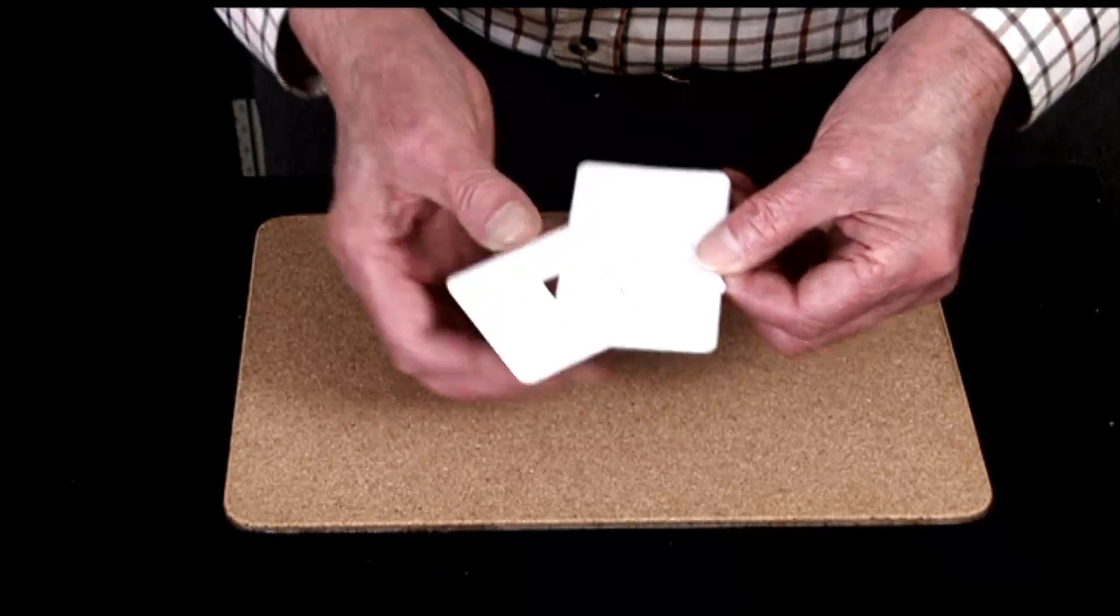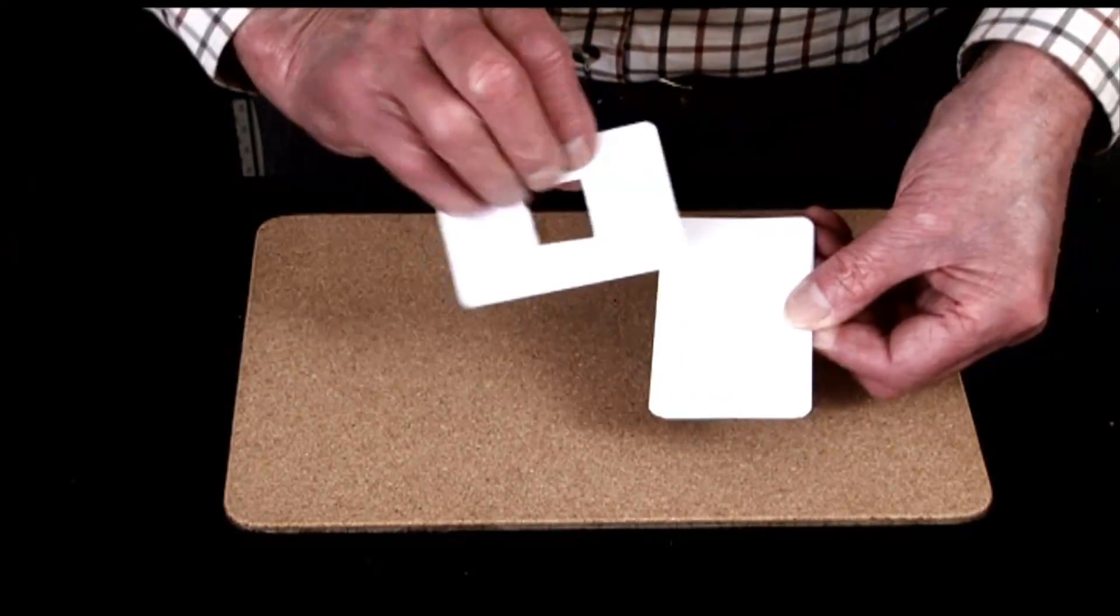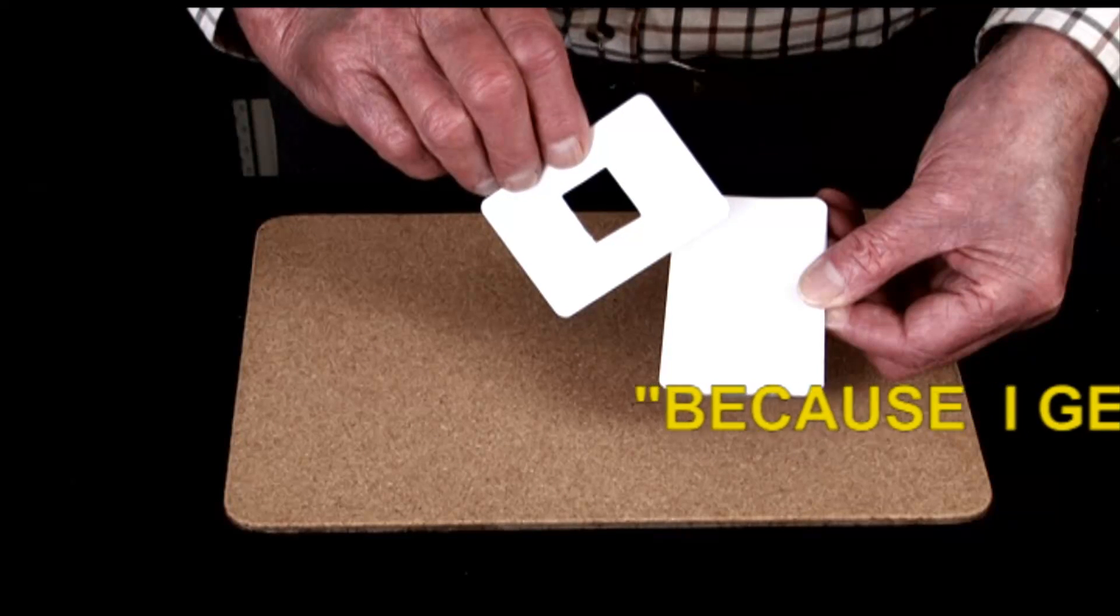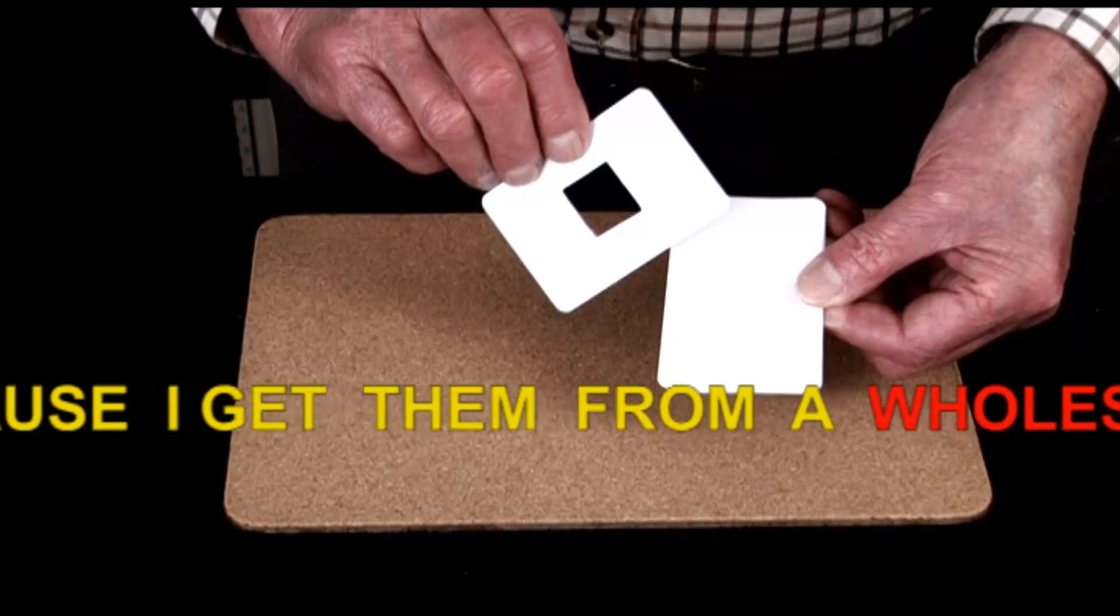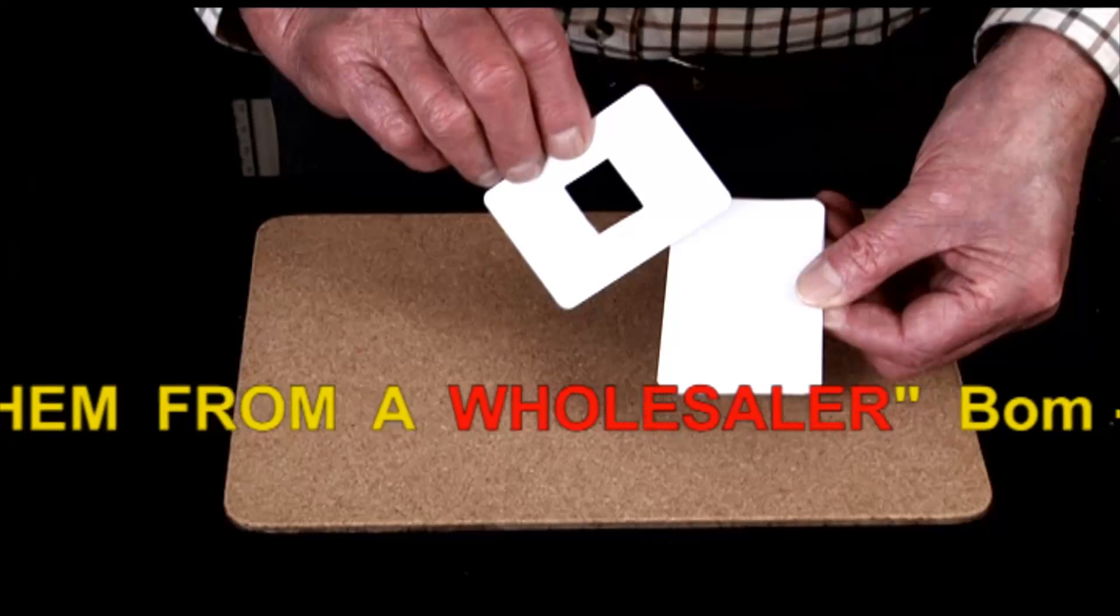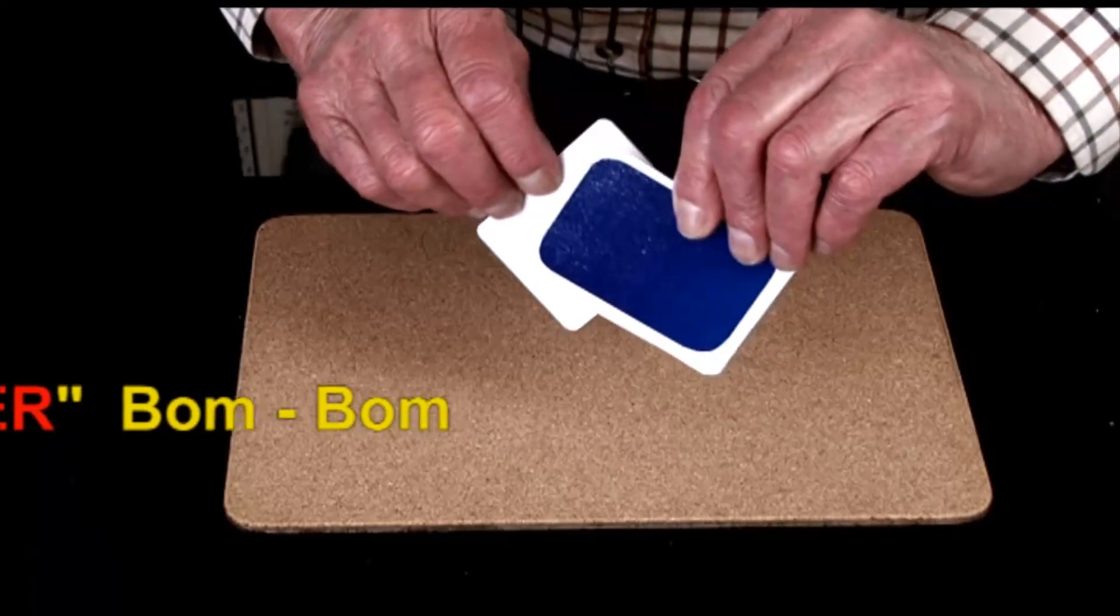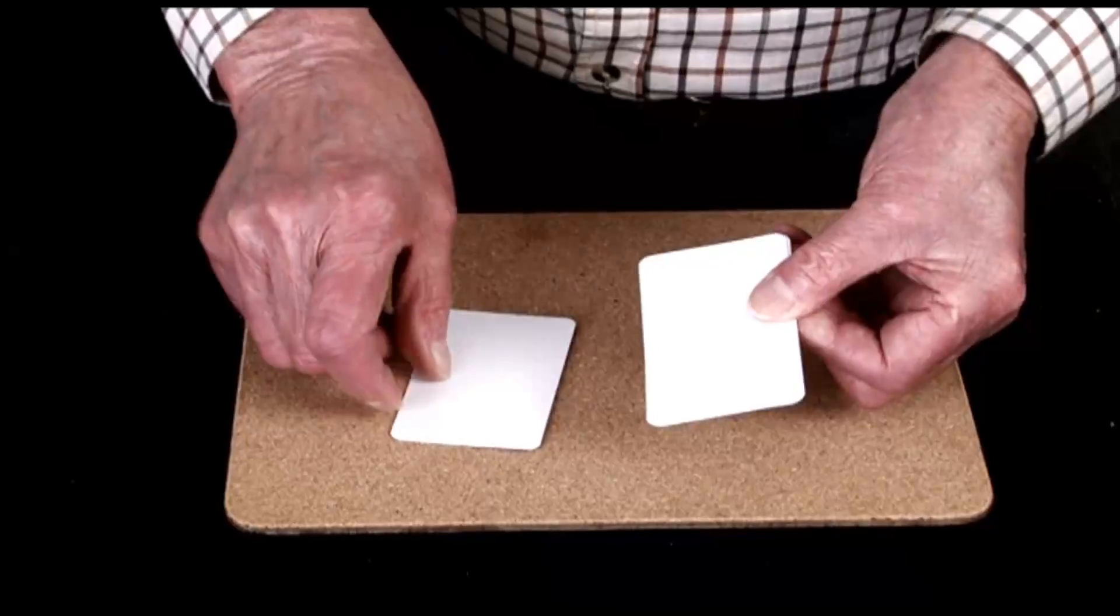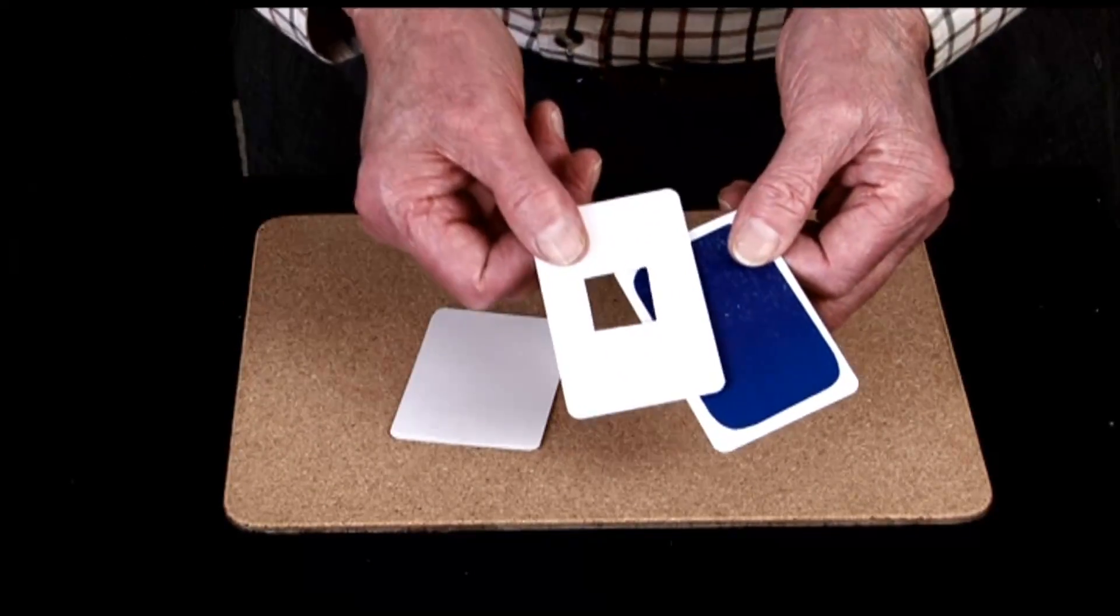Now what is interesting about these hole cards, not the hole cards, is that the hole is actually on both sides. Whereas the hole card, as you can see, that's blue on that side, and it's the same over here. You've got a hole card with a hole, and a hole card that's blue.